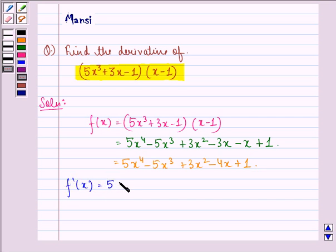That will be equal to 5×4×x^(4-1) - 5×3×x^(3-1) + 3×2×x^(2-1) - 4×x^(1-1) + 0.